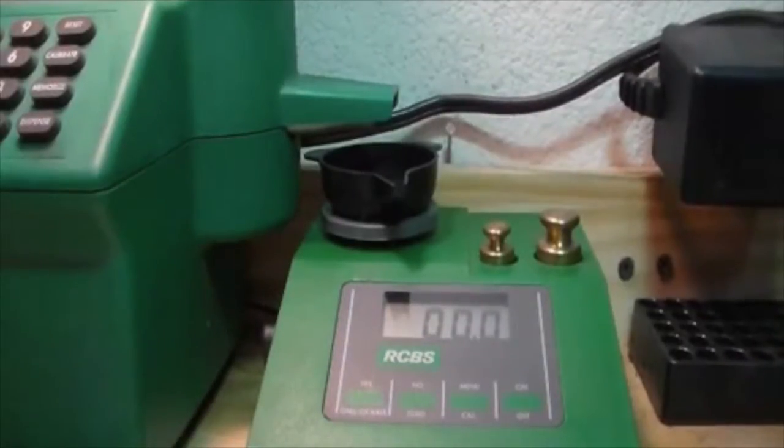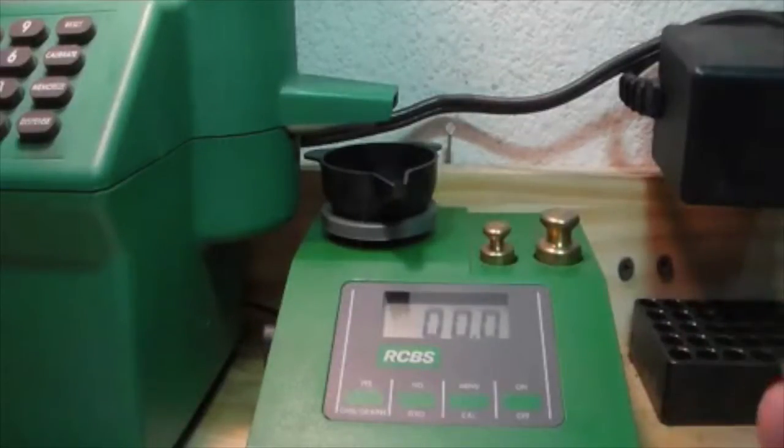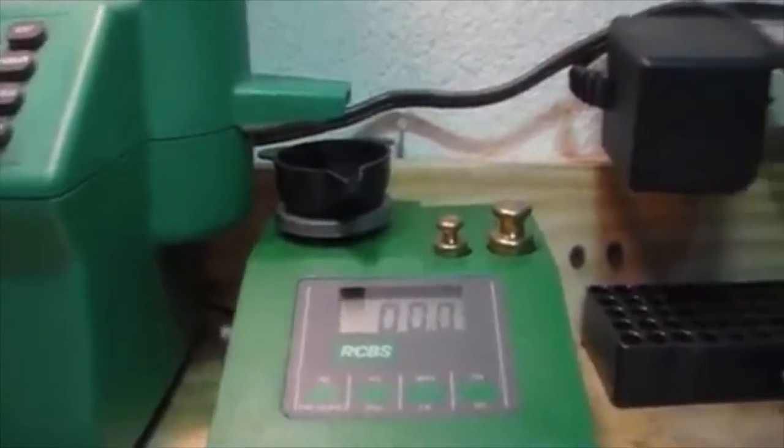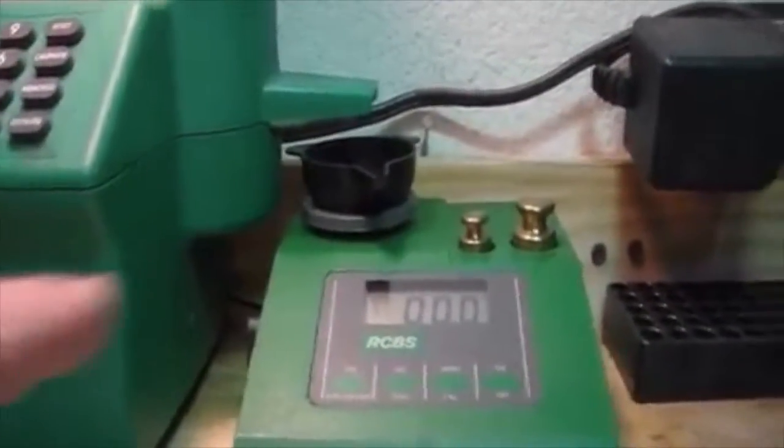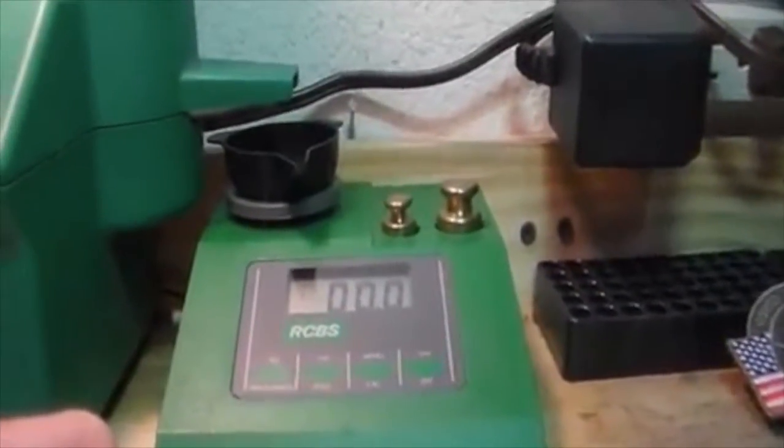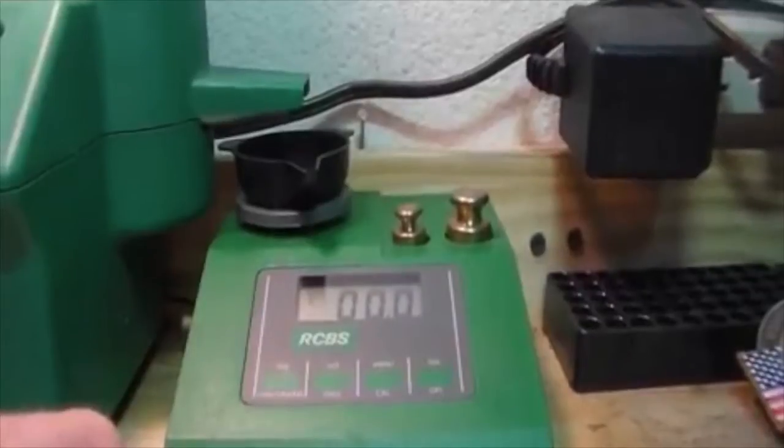One of the keys to getting an accurate load is going to be a weighed powder charge. If you use a progressive or just a throw type lever powder thrower, you're going to get a charge by volume versus weight. First thing you've got to do with these is calibrate your scale, which I did in part one of the video. Go check that out.